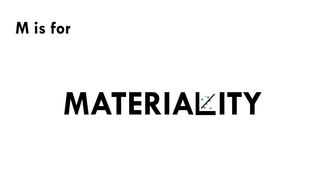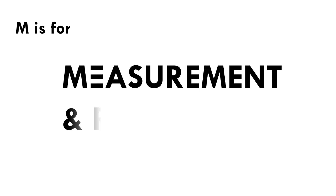M is for materiality — a concept that focuses on identifying and prioritizing the most significant environmental, social, and governance issues for an organization. Materiality assessments help companies understand the issues most relevant to their operations and stakeholders, enabling them to prioritize efforts and disclose relevant information. M is for measurement — there's an old maxim: you've got to be able to measure it to be able to manage it. Measuring the right things is crucial to implementing a good ESG strategy.